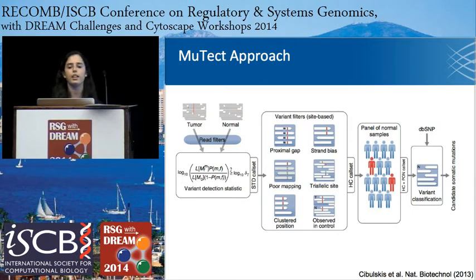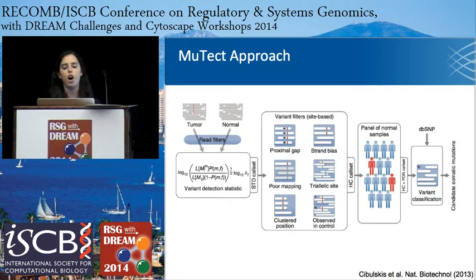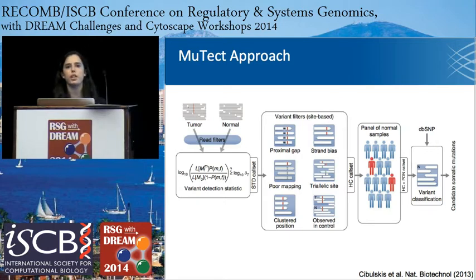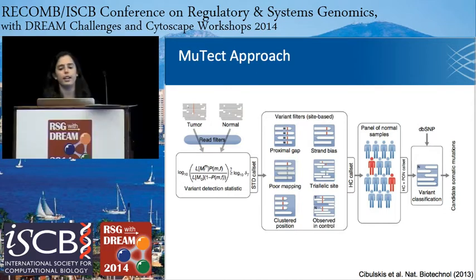Once the statistic is calculated, we apply a number of filters, which we expanded upon in the synthetic data. These include a proximal gap filter: if a mutation occurred within 11 base pairs of a deletion, we would assume it to be an alignment error. We also remove events in poor mapping regions or where the mutation occurred close to the ends of reads. Additionally, after these filters were applied, we applied a panel of normals — MuTect's standard approach uses a panel of 1,000 genome normals. If a variant is seen in any of those 1,000 genomes, we claim it to be either artifactual or a germline event and remove it from our analysis. After this process, we have the candidate somatic mutation calls.